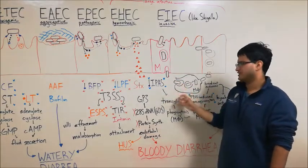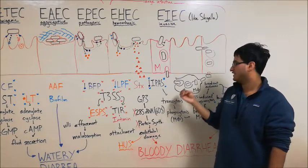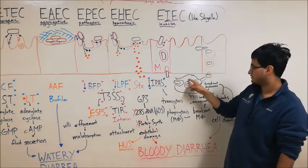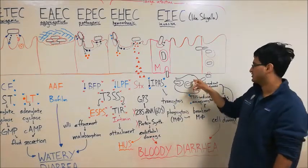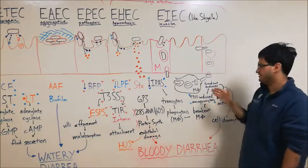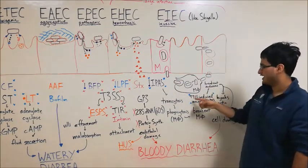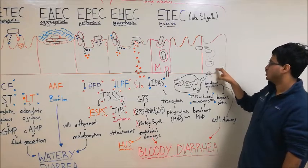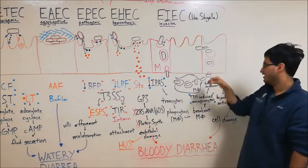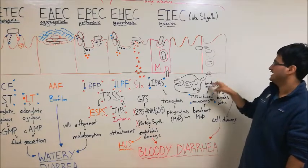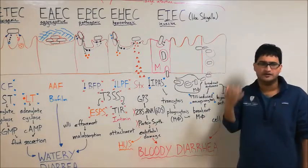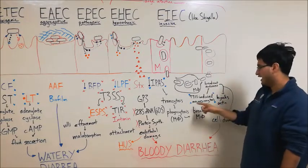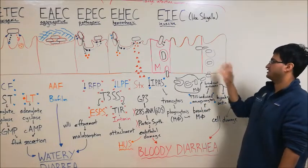A macrophage will encounter the EIEC bacterium in the lamina propria and phagocytose it, as indicated here. But the EIEC is smart and it's going to break out of the phagosome and then induce apoptosis in this macrophage so it can escape. Once this EIEC has escaped, it's then going to use this T3SS to secrete various IPA proteins inside the enterocyte that will cause the enterocyte to actually macropinocytose or eat up this EIEC bacterium into the enterocyte. So it's actually going to induce its own phagocytosis in a sense. This process is also known as membrane ruffling, but here we're calling it macropinocytosis. It's going to get eaten up and taken inside the enterocyte.